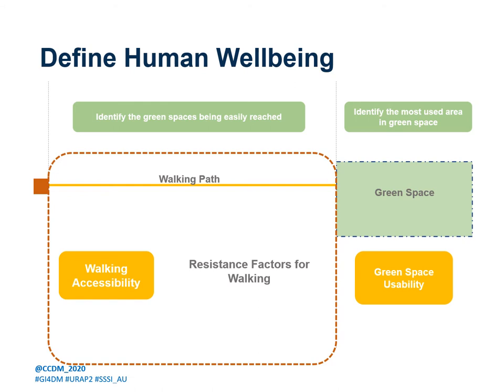Human wellbeing is a broad concept. But for this paper, human wellbeing relating to green space is used to describe whether people can easily reach and use green space. So it can be divided into two parts. The first part is walking accessibility, caring about the ease of the path to green space. The second part is green space usability, to identify the most used area in green space. This paper is discussing the first part — walking accessibility. We will identify the spatial resistance factors impacting on accessing the green space, and intend to optimize green space planning at the micro scale based on human daily needs and behaviour.